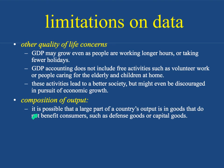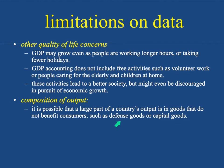The last limitation is the composition of output. It's possible that a large part of a country's output is in goods that do not benefit consumers, such as defense goods or capital goods. If a country's GDP goes up but all it's building is new missiles or military installations, it's hard to argue that a higher GDP raises the standard of living — there's no common benefit from that kind of addition to gross domestic product.